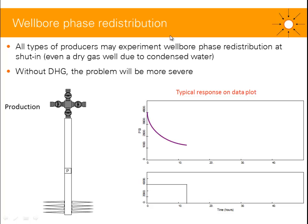So what is wellbore phase redistribution? While you have single-phase flow in the reservoir, you probably have multi-phase flow in the wellbore. That is probably because your wellbore pressure is lower than your saturation pressure.